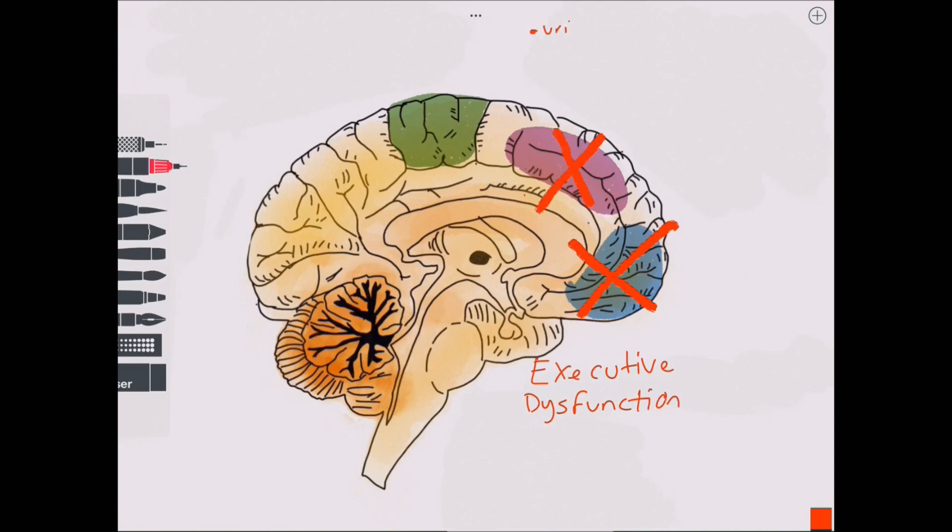Secondly, damage to the supplementary motor area can cause a range of speech abnormalities and urinary incontinence due to damage to the micturition inhibitory area.